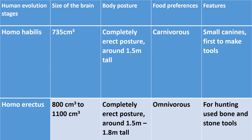After Australopithecus, the next stage was Homo habilis. These Homo habilis had a brain size of 735 cm³. Body posture was completely erect and height was around 1.5 meters. Food preference: they were carnivorous — they used to eat meat. Other features include small canines and they were the first to make tools with the help of stones.